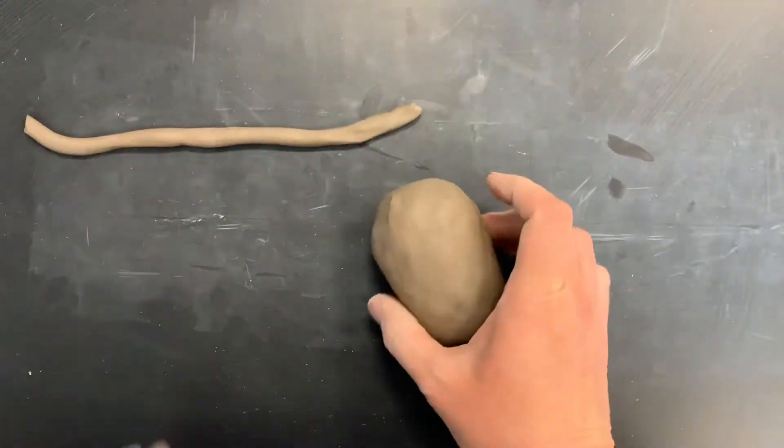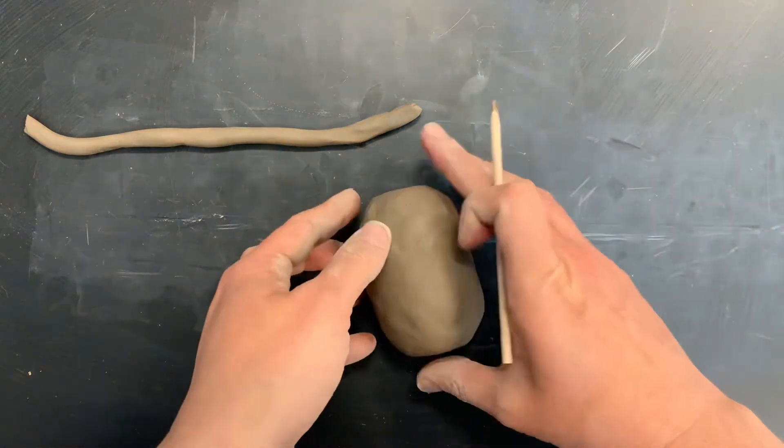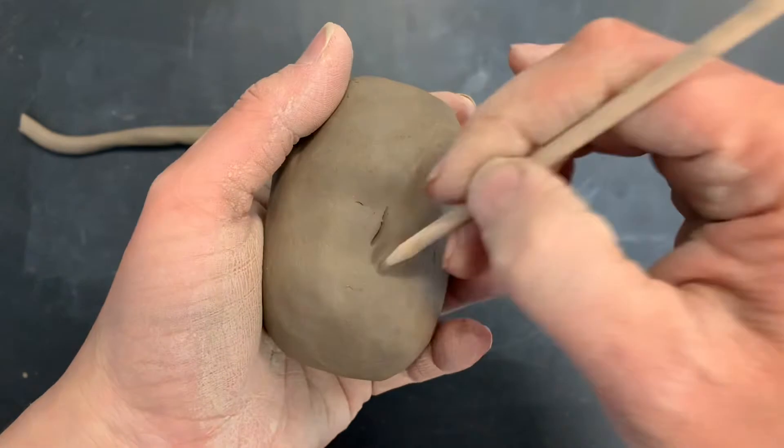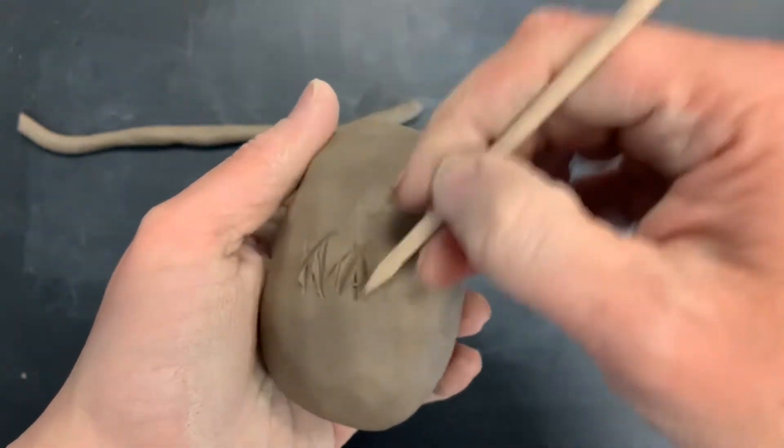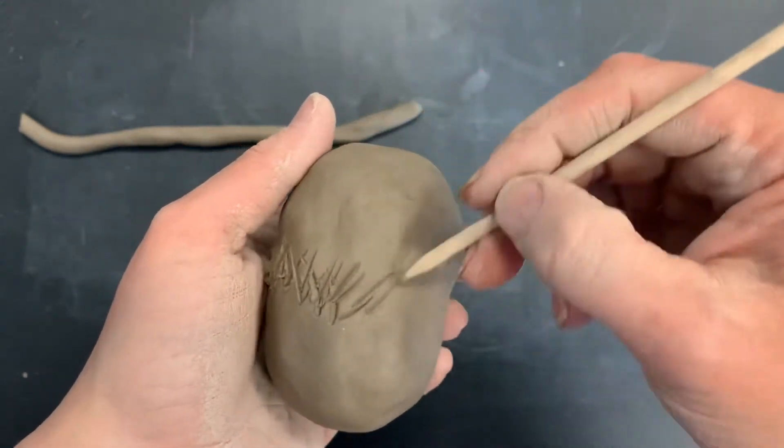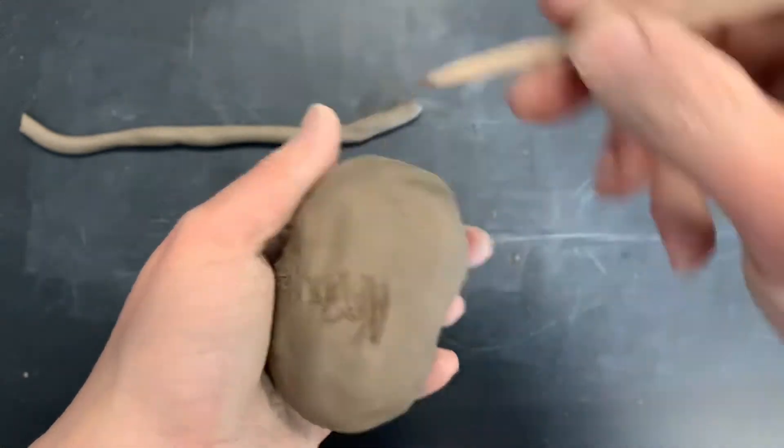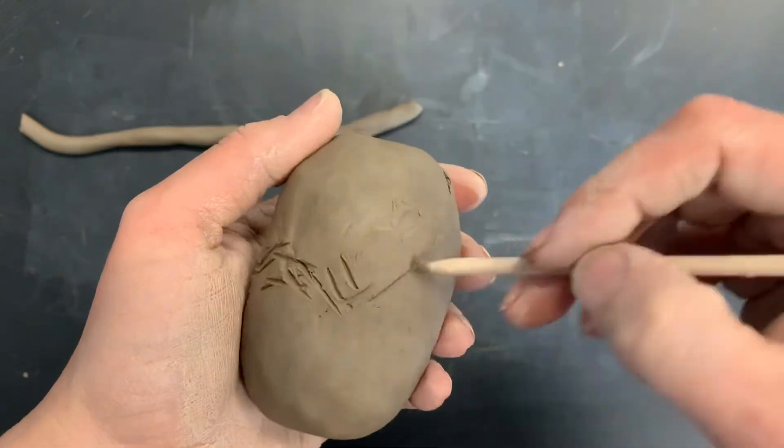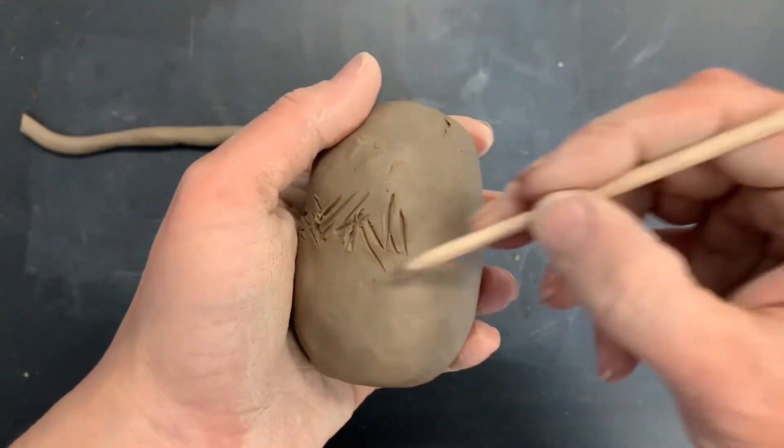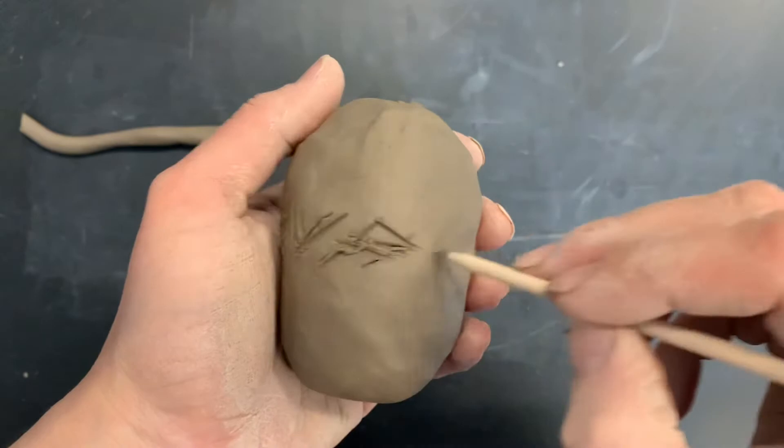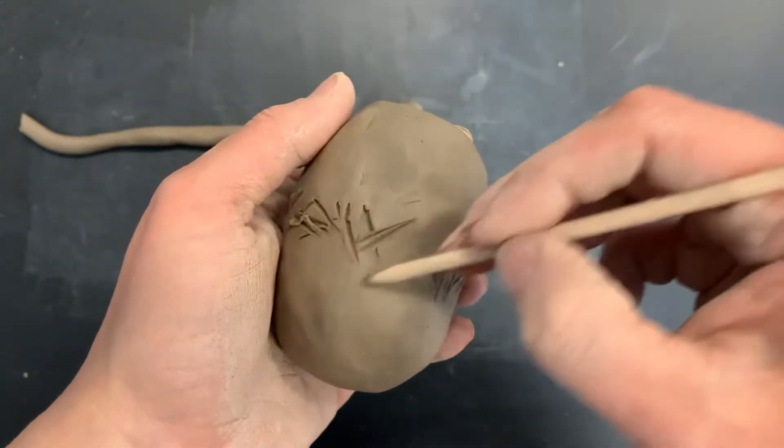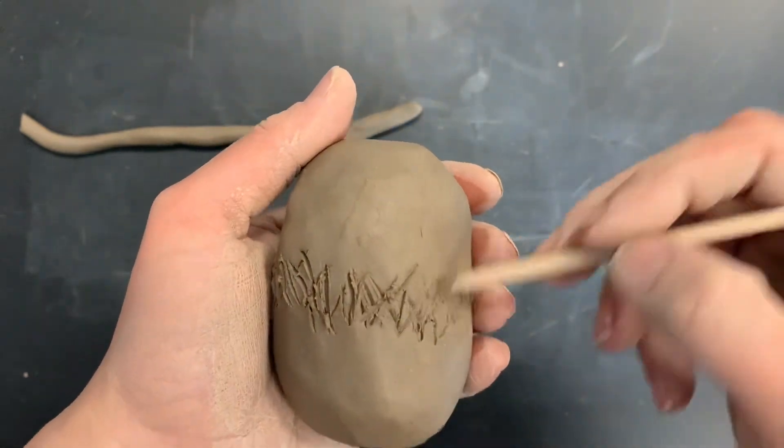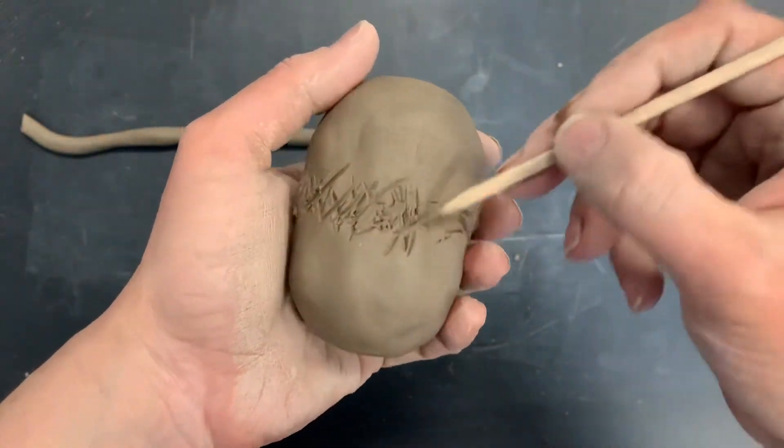Remember, whenever we attach clay we need to remember the triplets: we need to score, slip, and blend. The first of those triplets is to score the clay. We take our wood stick or a nail tool or something that you may have that's sharp, even a fork or plastic fork sometimes works for this, and you're just going to scratch crisscross lines in the area that you're going to be attaching the clay. Now I know that we attached these pinch pots somewhere around the middle, so that's where I'm making my score marks.